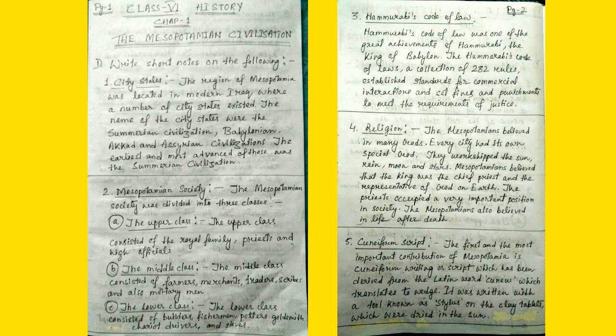Number 3: Hammurabi's Code of Law. Hammurabi's code of law was one of the great achievements of Hammurabi, the king of Babylon. Hammurabi's code of laws, a collection of 282 rules, established standards for commercial interactions and set fines and punishments to meet the requirements of justice.